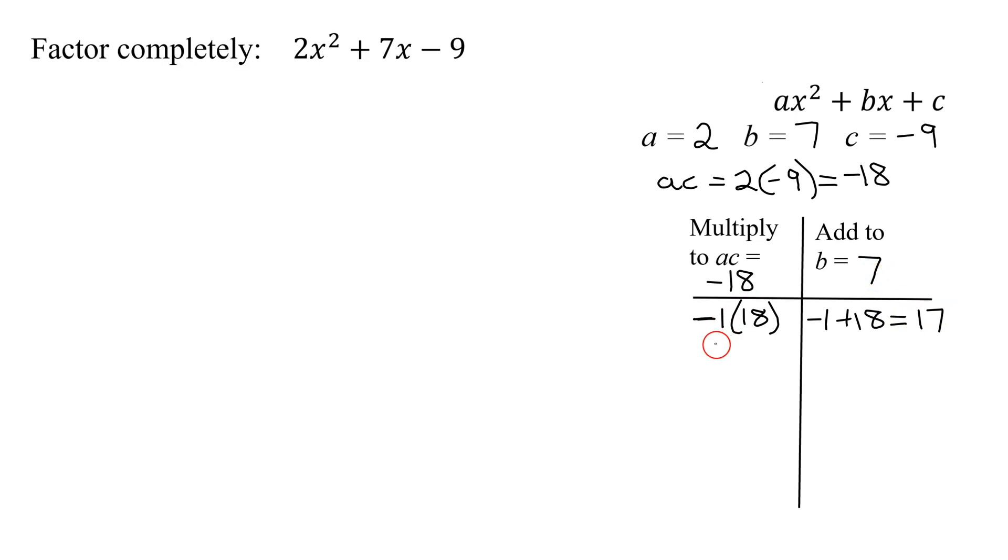Does 2 go into 18? Yes. So I'm going to have negative 2 times 9 is negative 18. And negative 2 plus 9, what does that add up to? Positive 7. Is that what I'm looking for? Yes.